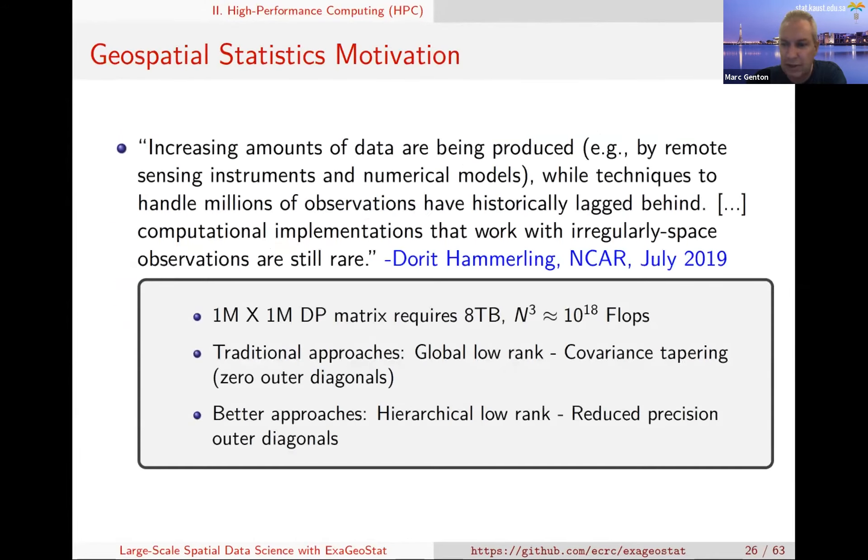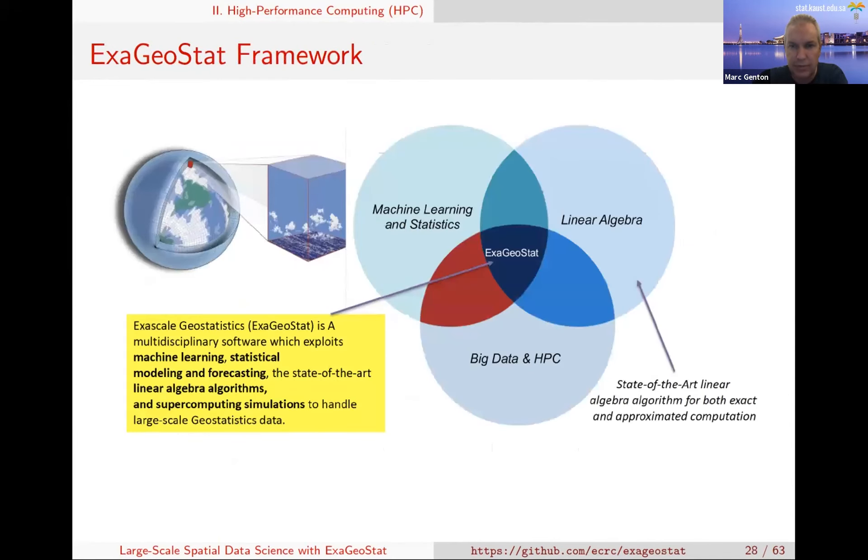I'll skip some details here, but if you're dealing with N equals 1 million, a 1 million by 1 million matrix in double precision will require about 8 terabytes of memory space. If you want to evaluate the likelihood, N cubed, you're already at 10 to the power 18, at exascale. You can do approximation. Traditional approaches have global low rank structure or covariance tapering. But there are better approaches such as hierarchical low rank, and you can also reduce precision in some parts of the matrix to save memory and speed.